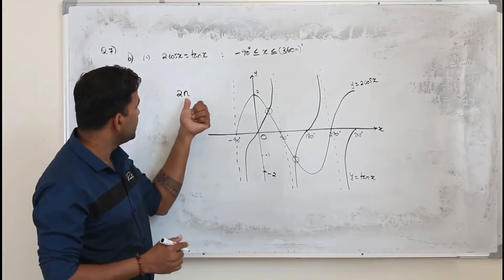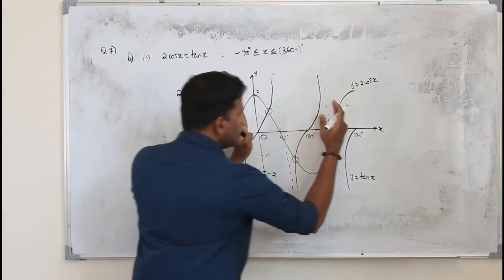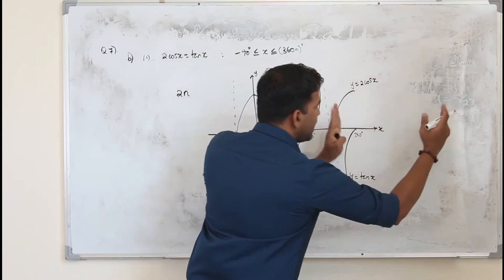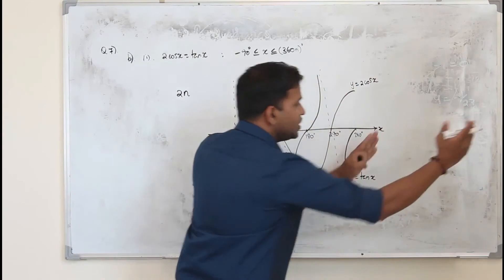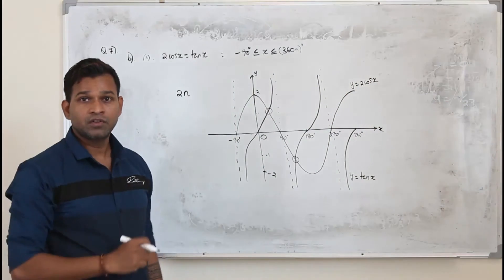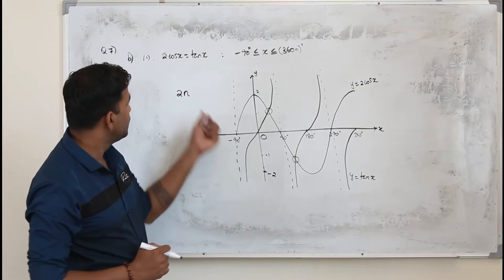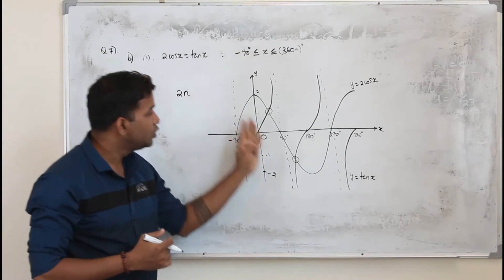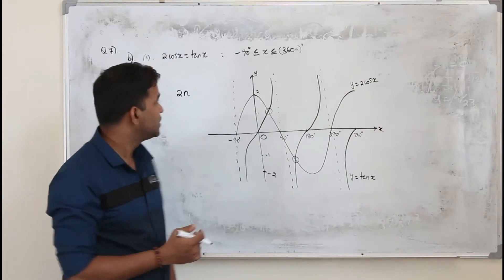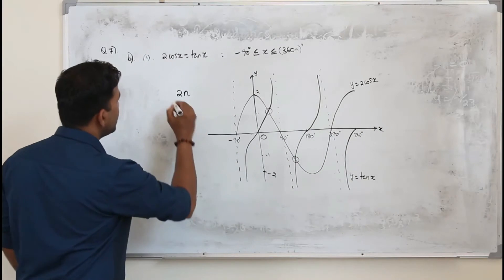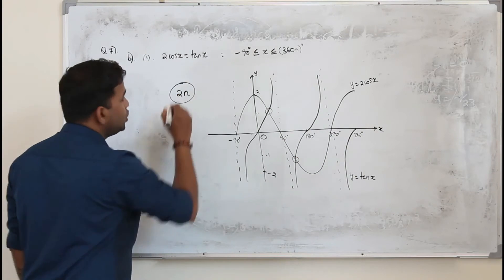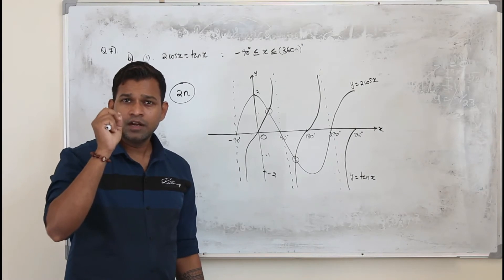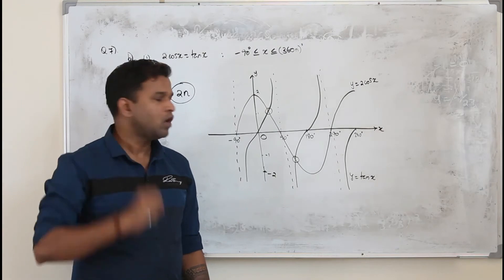Why are we writing 2n? Because we have 2 points of intersection in every 360-degree interval. So if n is 10, you will have 2 times 10 points of intersection. In general, you will have 2n number of solutions. But here you have to be careful about one more thing.